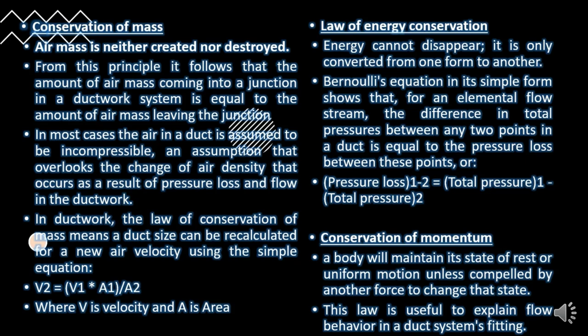Imagine if there are 500 cars leaving from Air Keroh Toll, and some went out at Nilai Toll, some at Seremban Toll, and some at Sungai Besi Toll. The addition of the total cars going out from Nilai, Seremban, and Sungai Besi Tolls must be 500, which equals the incoming cars at Air Keroh Toll. The concept is the same.